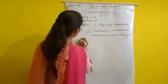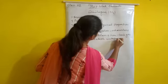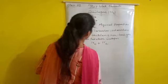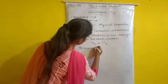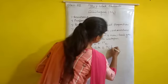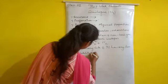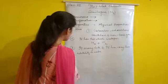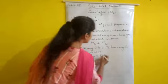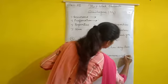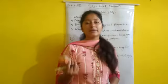Dinitrogen has two stable isotopes: 14N and 15N. It is a very light gas with very low solubility in water. At low temperature and high pressure, dinitrogen converts into liquid dinitrogen.